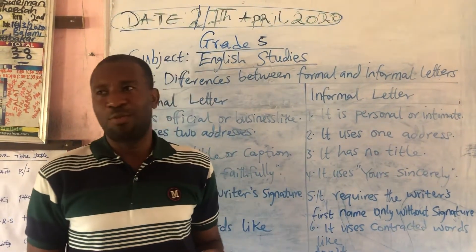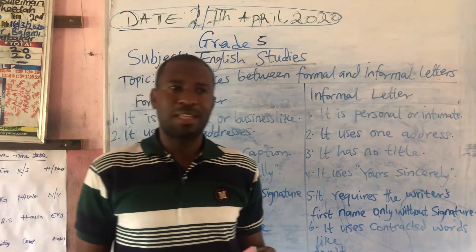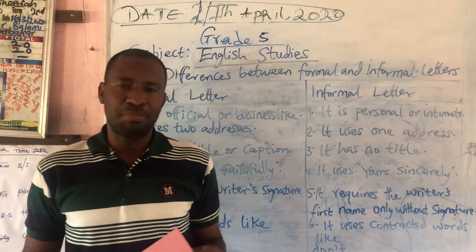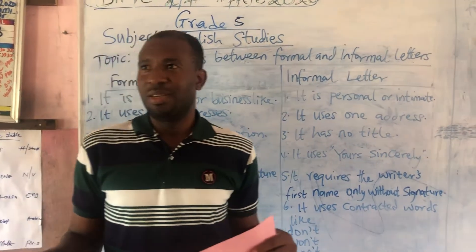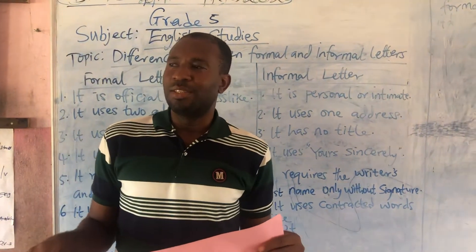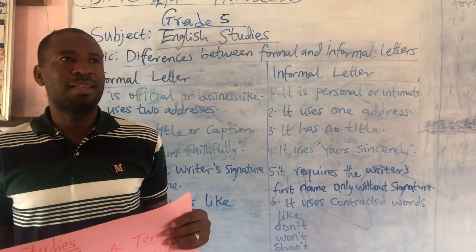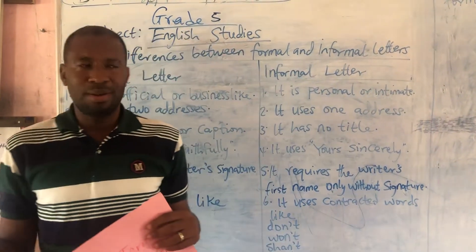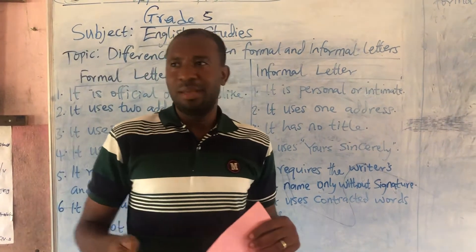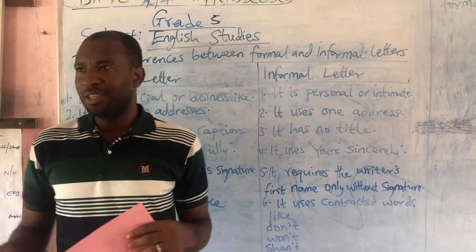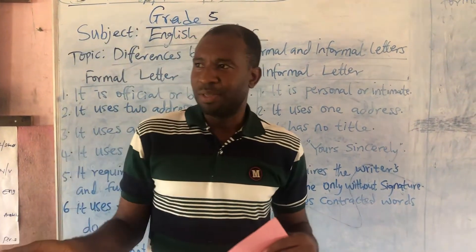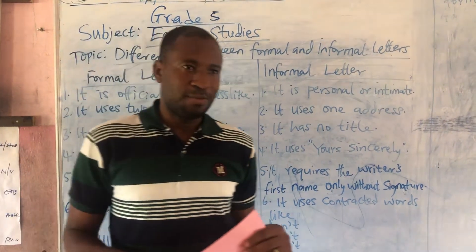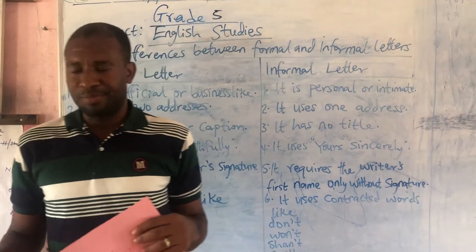A formal letter is an official letter that is written to a person who occupies a position of authority. Examples are letters to your president, governor, commissioner, minister, judge, inspector general of police, chief of staff, and so on.